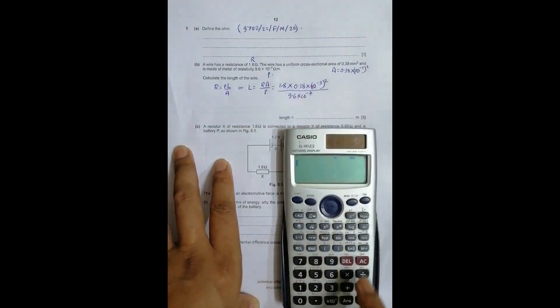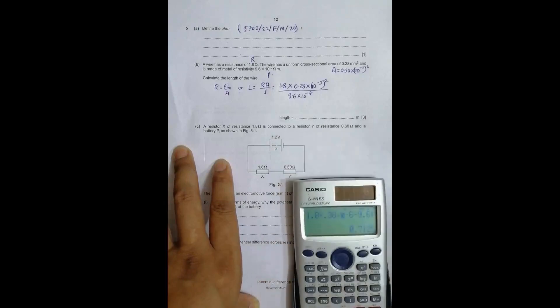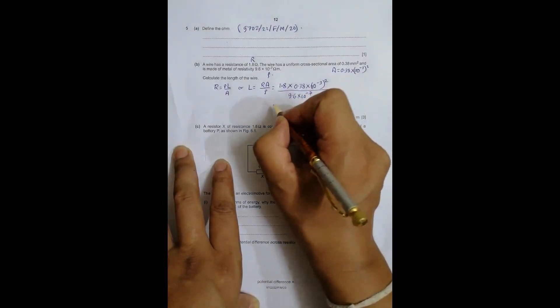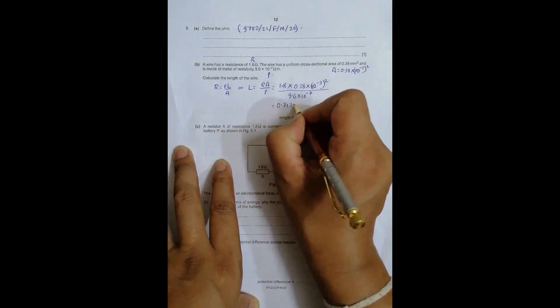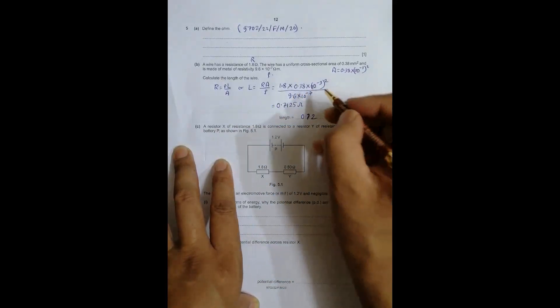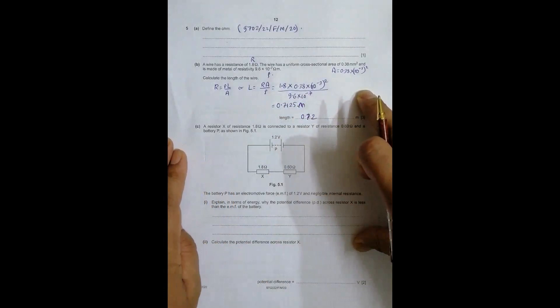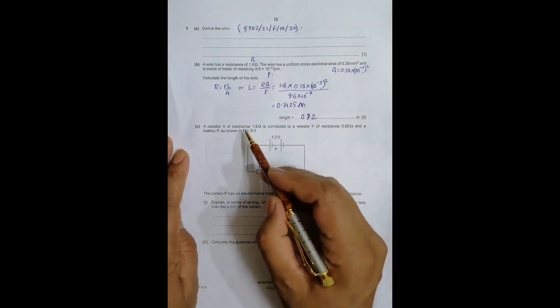When I do the calculation, it equals 1.8 × 0.38 × 10^-6 divided by 9.6 × 10^-7, which equals 0.7125. Written in significant figures, it equals 0.71 meters since we are finding the length.